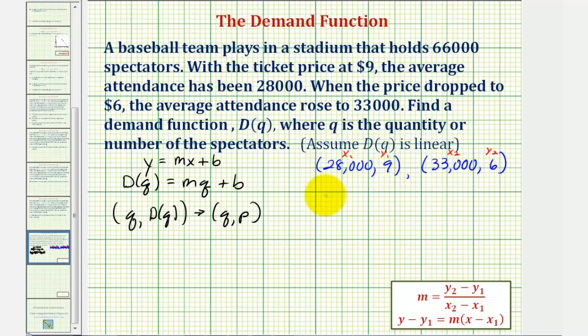And therefore, the slope would be equal to the change of y, which would be 6 minus 9 divided by the change of x. So this would be 33,000 minus 28,000. And therefore, the slope of the line is equal to negative 3 divided by 5,000.